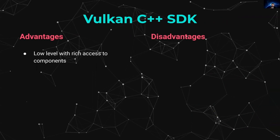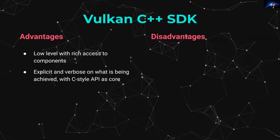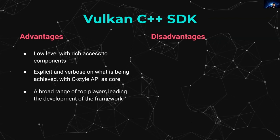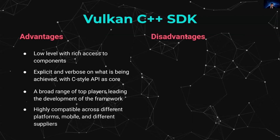Strong advantages include a very low-level interface with rich access to components through an explicit and verbose C-style API that provides direct access into the Vulkan SDK and the hardware underneath — very important for optimizations. There is a broad range of industry-leading players contributing to the standards, SDKs, and tooling. There is also an emphasis on interoperability and high compatibility across different platforms — mobile suppliers, AMD, NVIDIA, Qualcomm, etc.